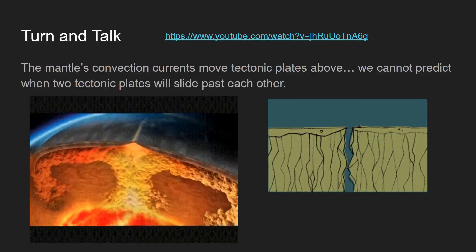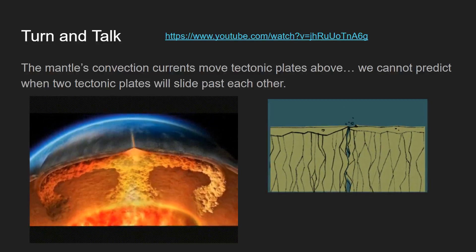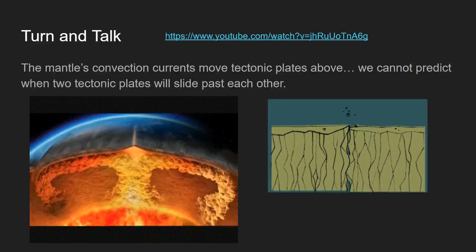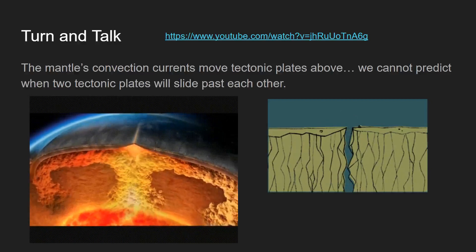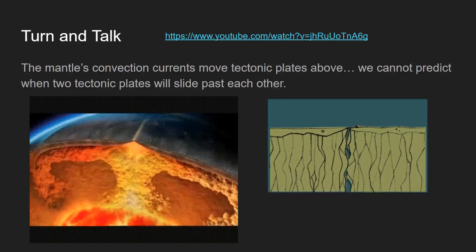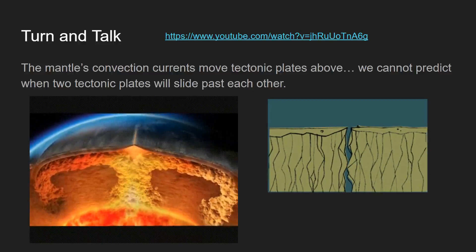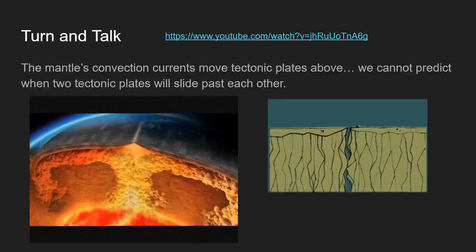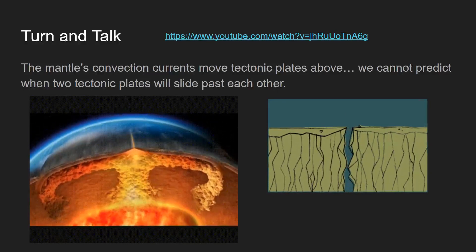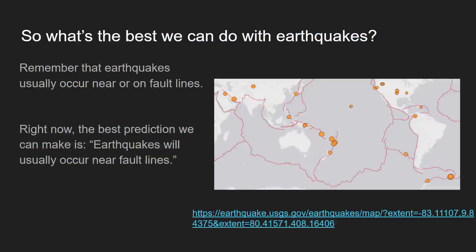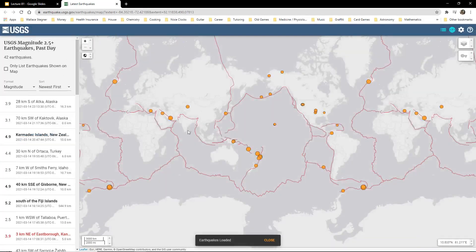The main reason we can't predict earthquakes is because the mantle's convection currents move tectonic plates, and those convection currents are very complicated. The crust itself is not homogeneous — there are different faults at different angles moving at different rates relative to one another. It's a very complex system. The best we can do is say that earthquakes will usually occur near fault lines. That's more or less all we can do at this point.